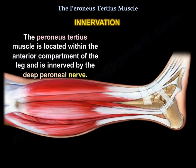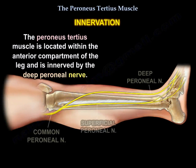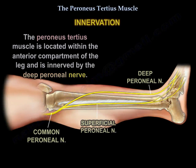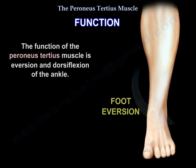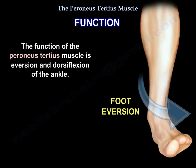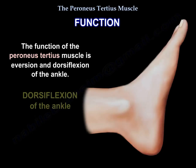The muscle is located in the anterior compartment of the leg and is innervated by the deep peroneal nerve. Its function is eversion and dorsiflexion of the ankle.